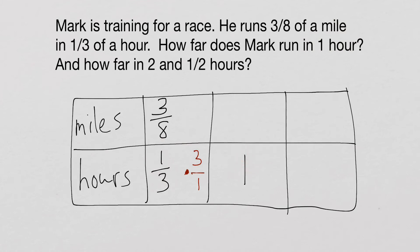And then we multiply the top by the same exact thing. So times three over one on the top. So what we're going to end up doing here is three times three, which is nine. So we're going to end up with nine and eight times one, which is eight. So in one hour, Mark can run nine-eighths of a mile.